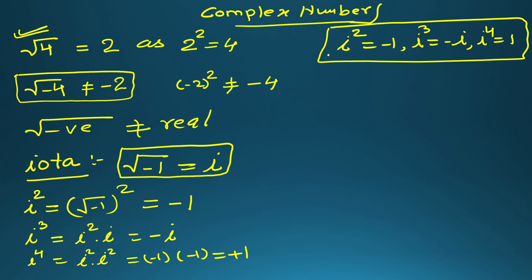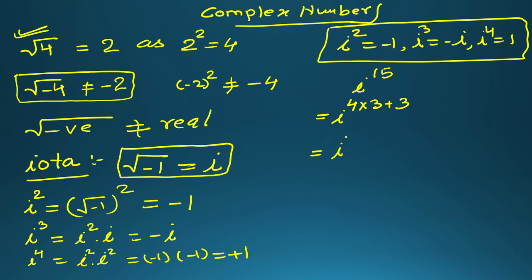These values will help you solve many questions. For example, if you have to find i raised to the power 15, I prefer to divide the power by 4 when it is greater than 4. If you divide 15 by 4, using the division algorithm you can write 15 as 4 times 3 plus 3. So i to the power 15 equals i to the power (4 times 3) times i to the power 3, using the property a^b times a^c equals a^(b+c).